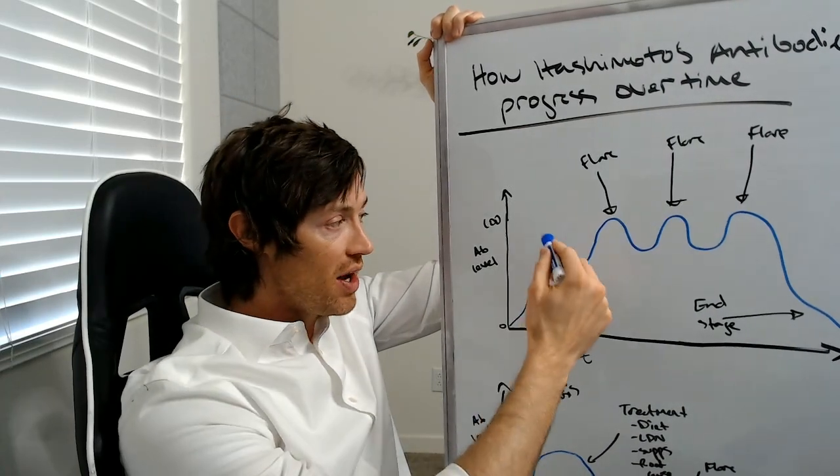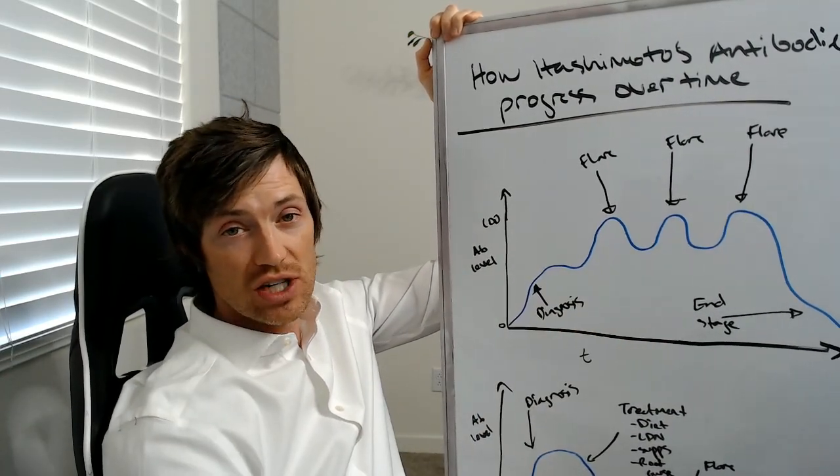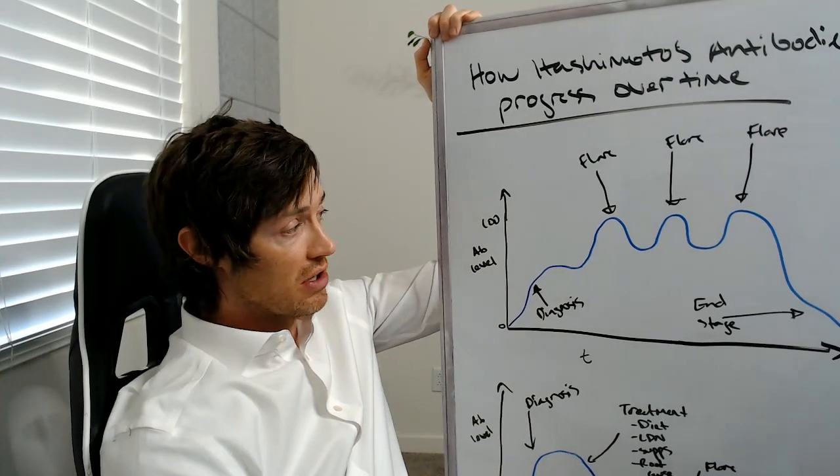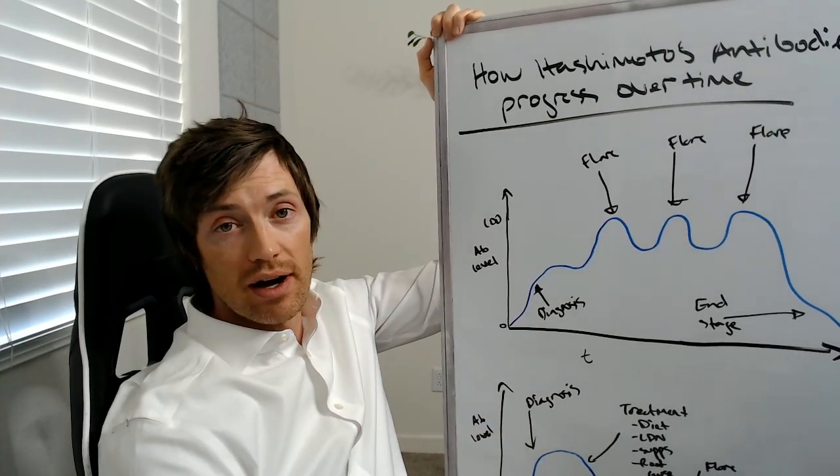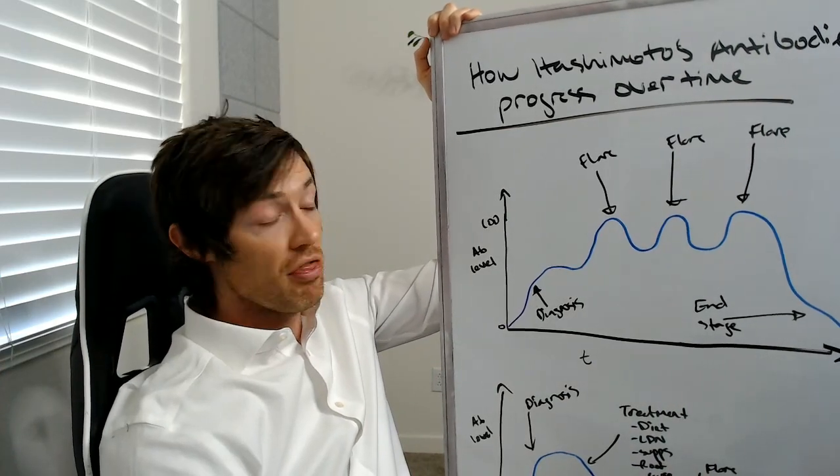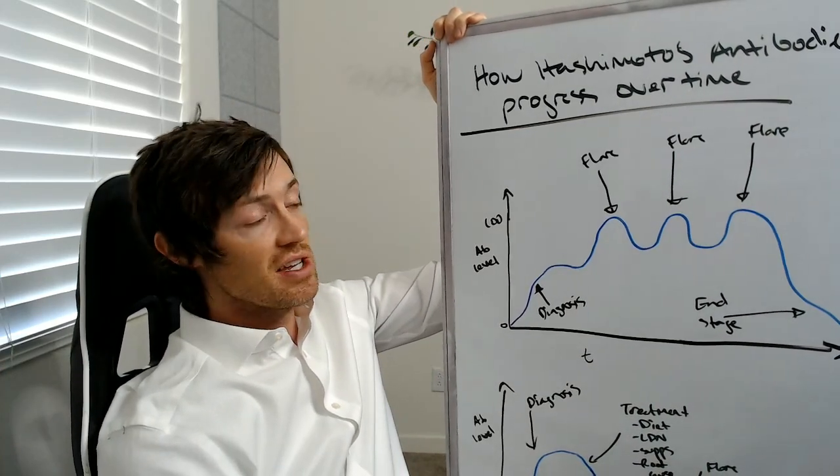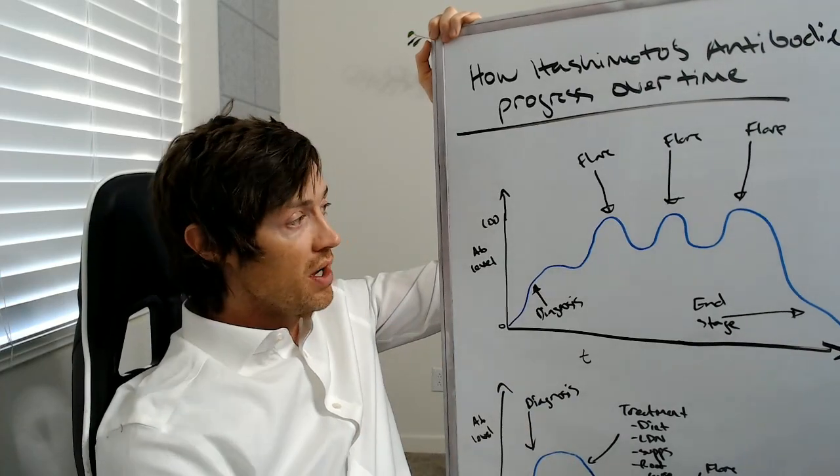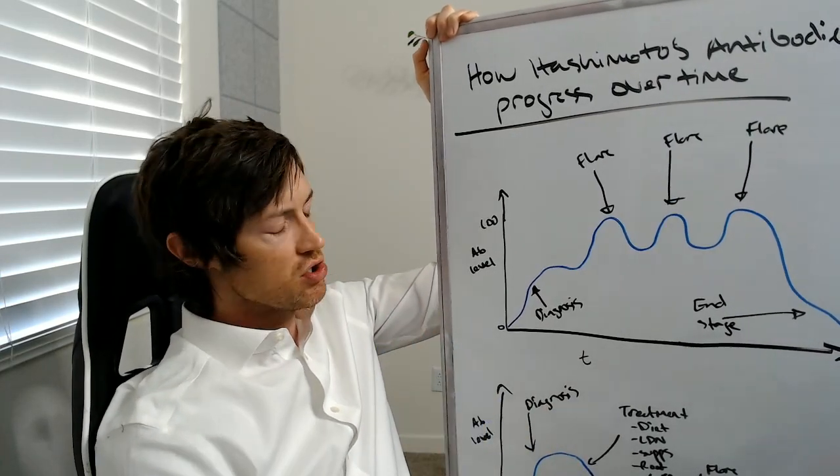What that means for you is that we're going to be talking about the levels of antibodies in your blood, in your body, over a period of time. We're going to be talking about what happens to those antibodies, how they shift, how they change around.